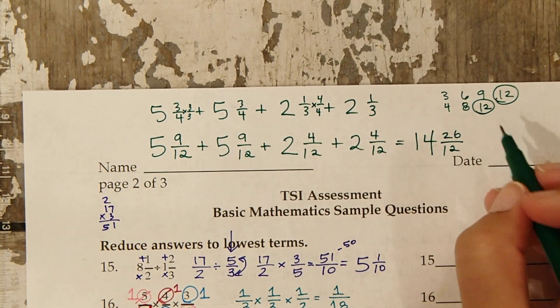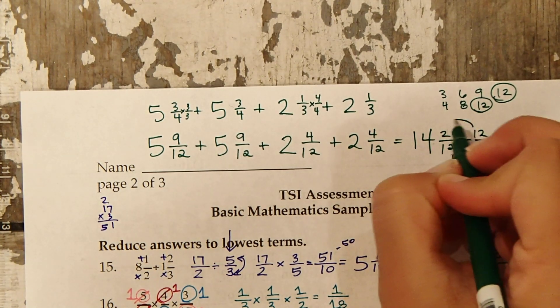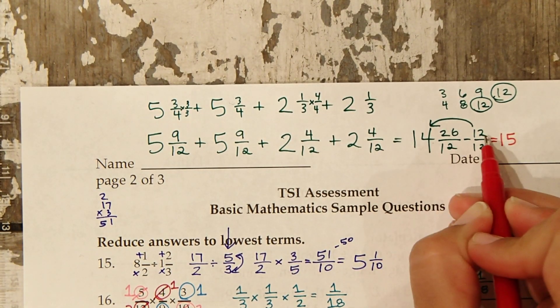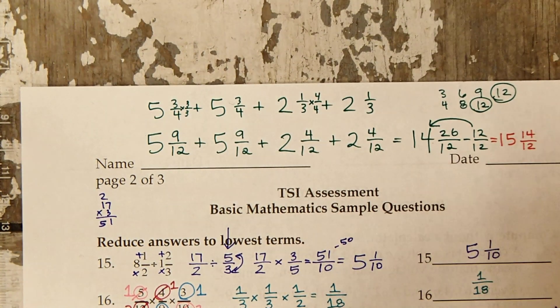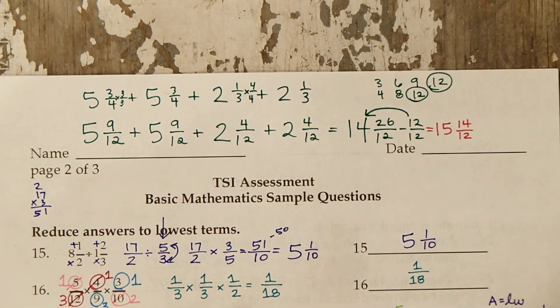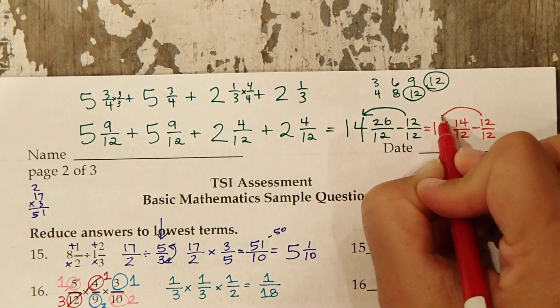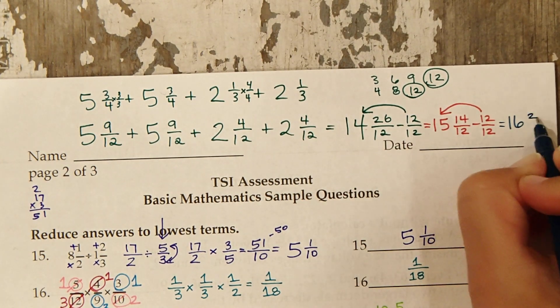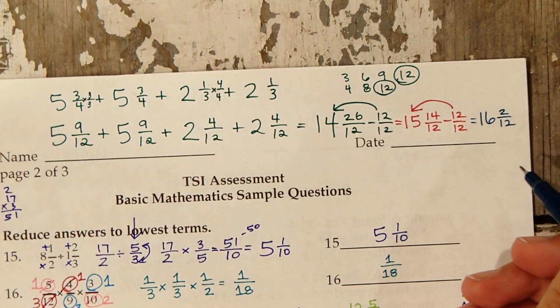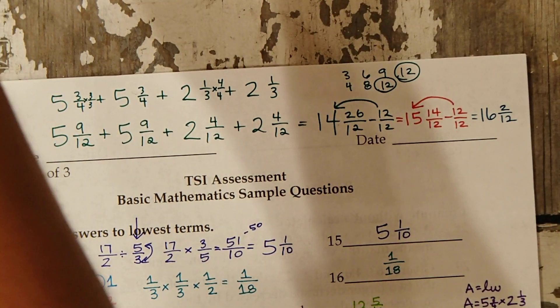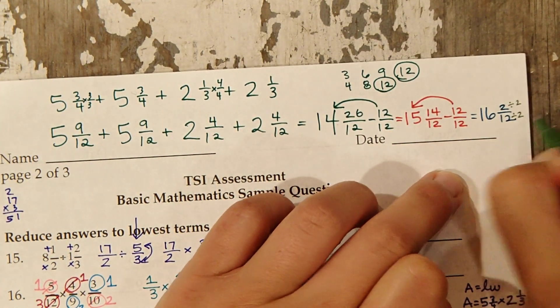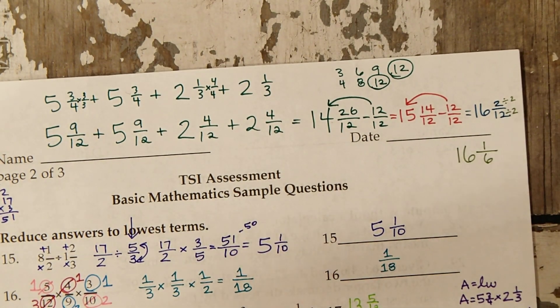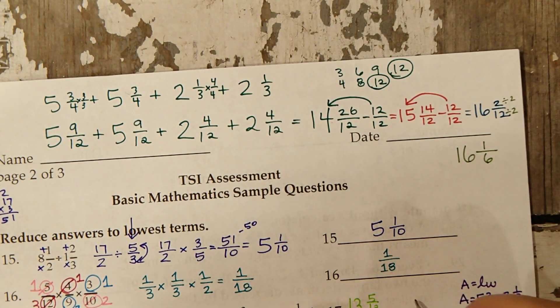This is an improper fraction, not our final answer. We need to take out one whole, add it onto the 14. This equals 15. 26 minus 12 is 14 twelfths. We still have an improper fraction, so we subtract again, another 12 over 12. We'll have 16 now. 14 minus 12 is 2. We're going to have to reduce. Each can be divided by 2. 2 divided by 2 is 1, 12 divided by 2 is 6. The perimeter is 16 and 1 sixth.